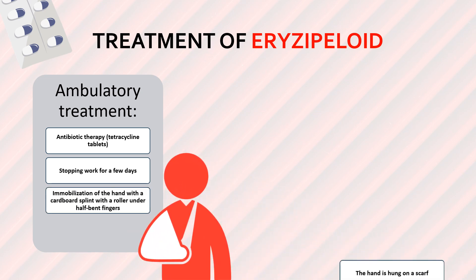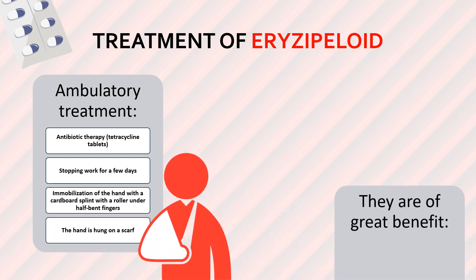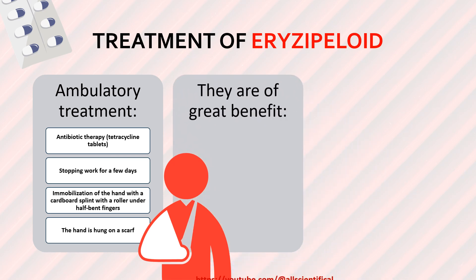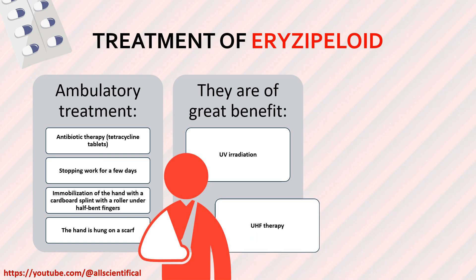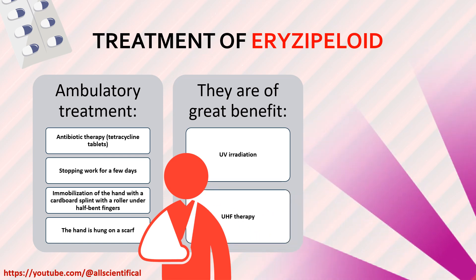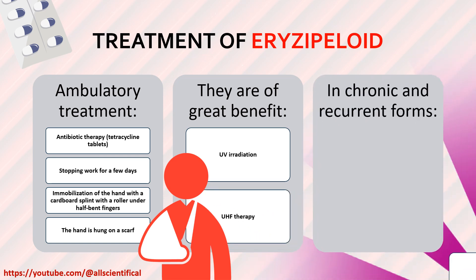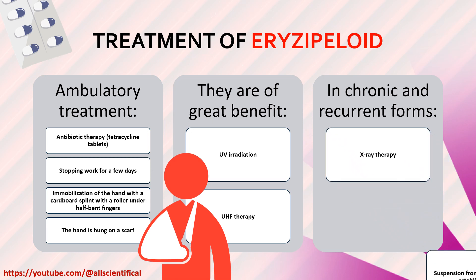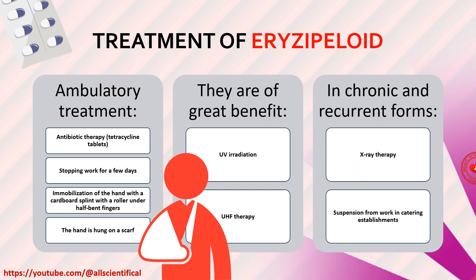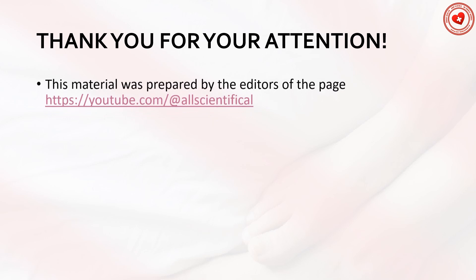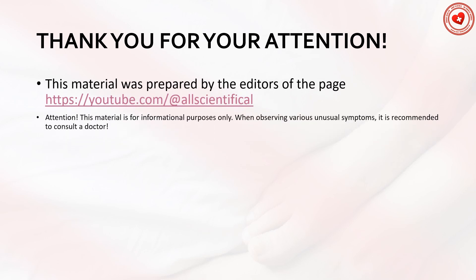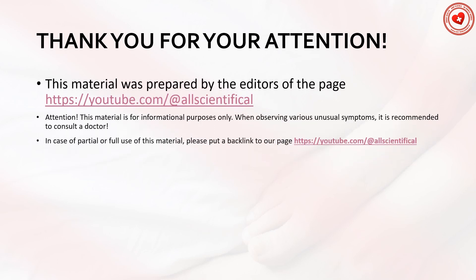Treatment of erysipeloid (swine erysipelas). Outpatient treatment consists of antibiotic therapy, usually tableted tetracyclines, stopping work for several days, and immobilization of the hand with a cardboard splint with a roller under half-bent fingers — the hand is hung on a scarf. UV irradiation or UHF therapy is of great benefit. In chronic and recurrent forms, X-ray therapy is used. Suspension from work in public catering establishments is required.